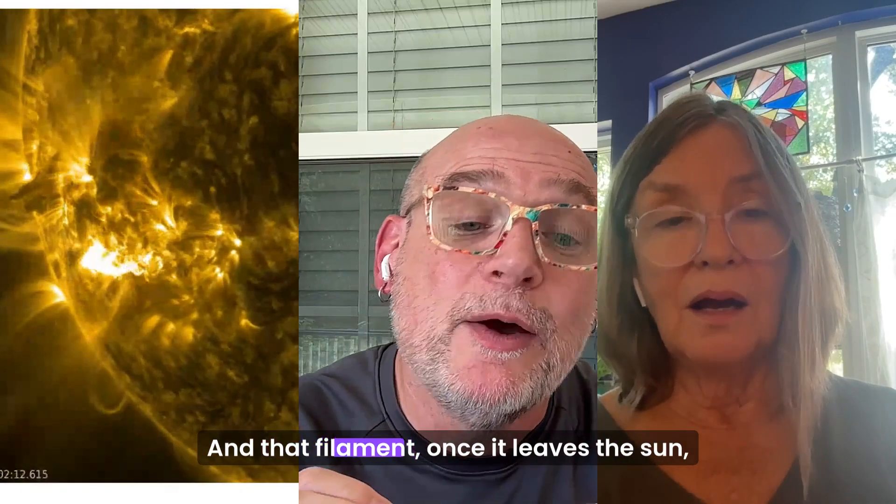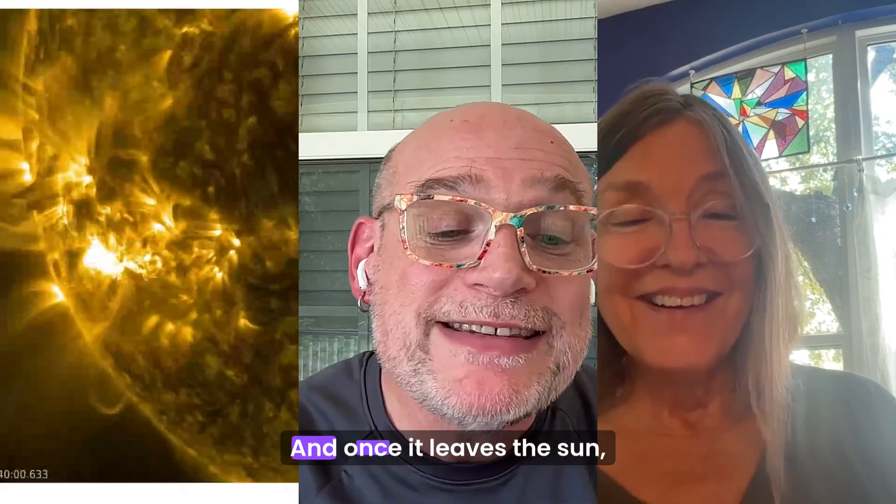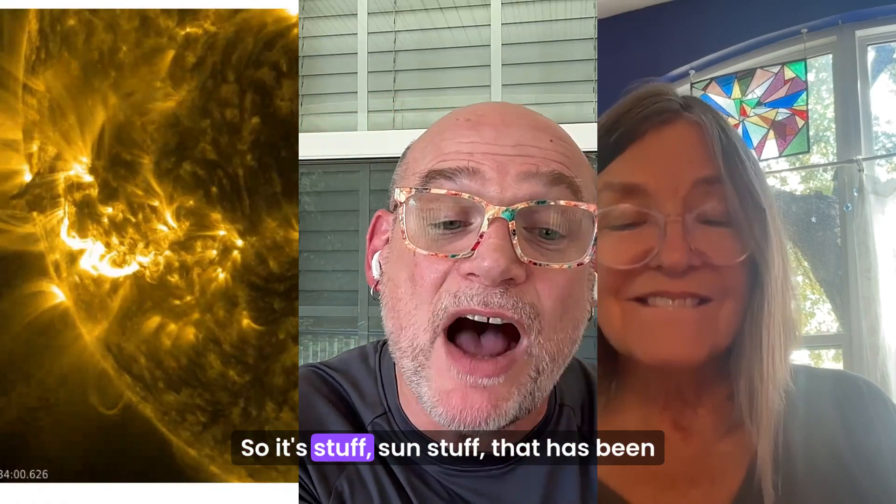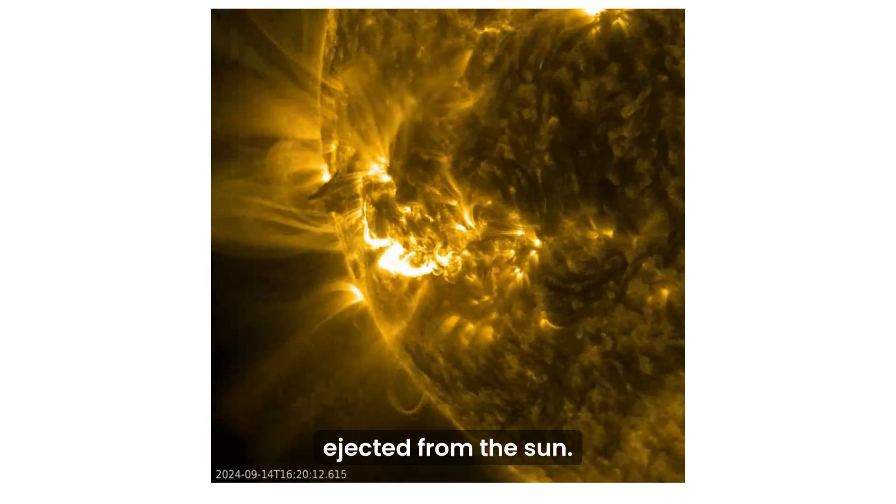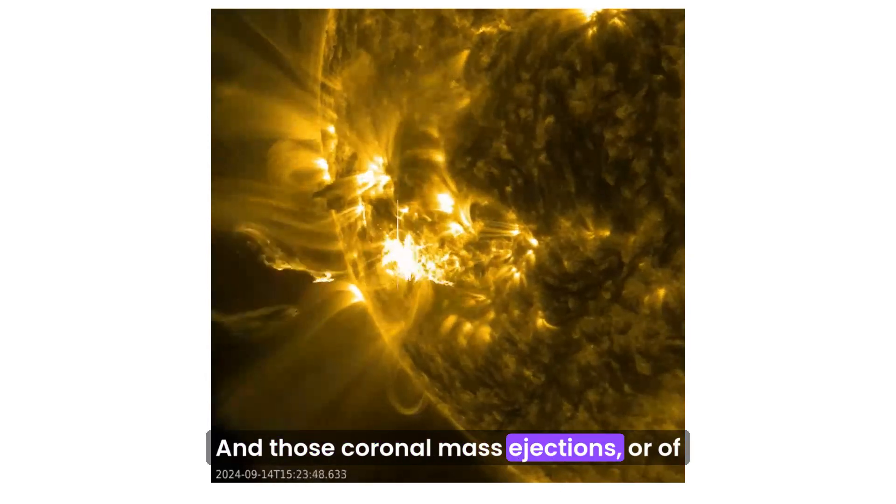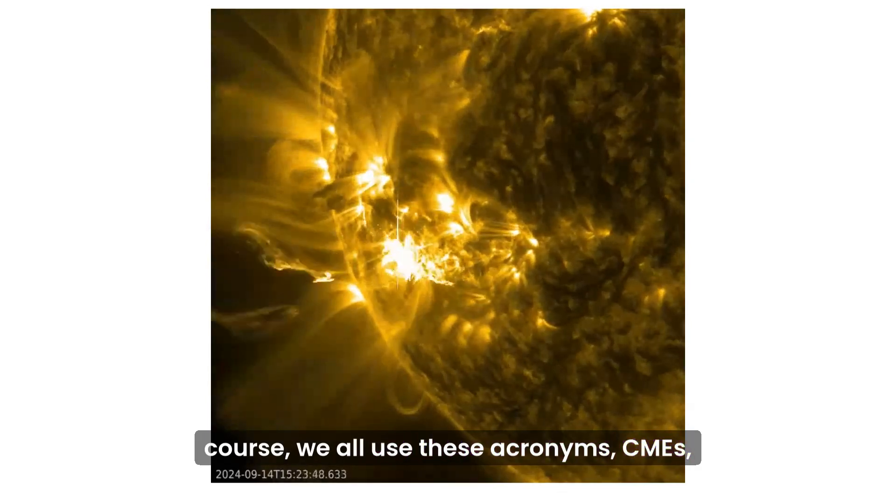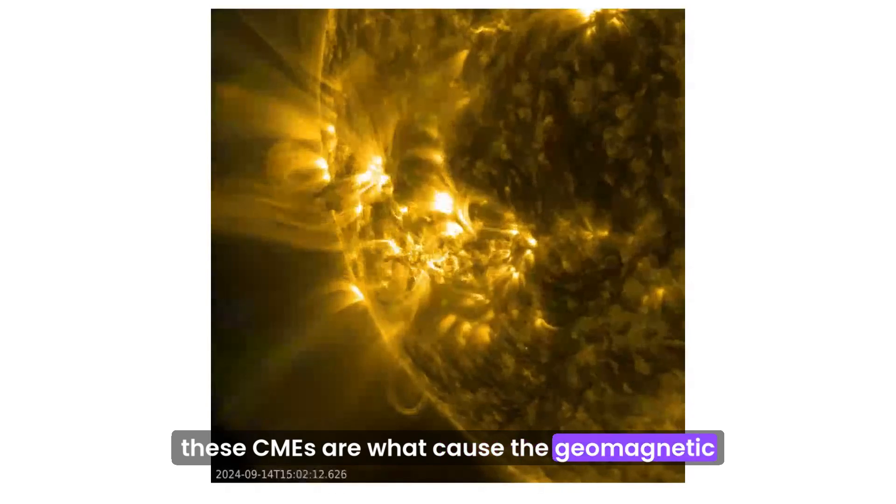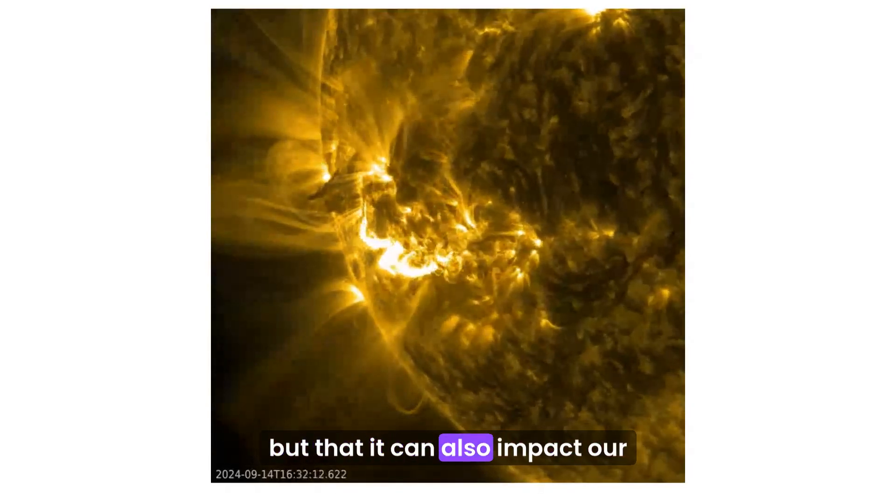And that filament, once it leaves the sun, yeah, you can see it coming off, and once it leaves the sun, we then call it a coronal mass ejection. So it's mass stuff, sun stuff, that has been ejected from the sun. And those coronal mass ejections, or of course, we all use these acronyms, CMEs. These CMEs are what cause the geomagnetic storms at Earth that give us the aurora, but that can also impact our communications.